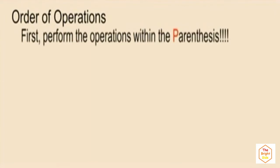We're doing order of operations. When simplifying an expression, we perform the operations within the parentheses first. The first category in order of operations refers to parentheses, but there are actually other types of grouping symbols that fall in this category. In this course, we're only talking about parentheses up to this point — we'll get to the others later.